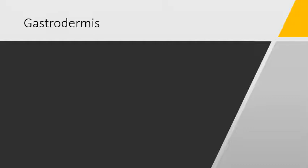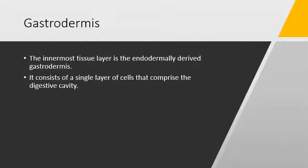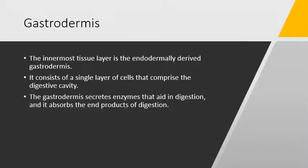The innermost layer gives rise to the tissue of gastrodermis. Gastrodermis is endodermally derived and it consists of a single layer of cells which form the digestive cavity. Gastrodermis creates enzymes which help in digestion and the cells of gastrodermis absorb the end products of the digestion.